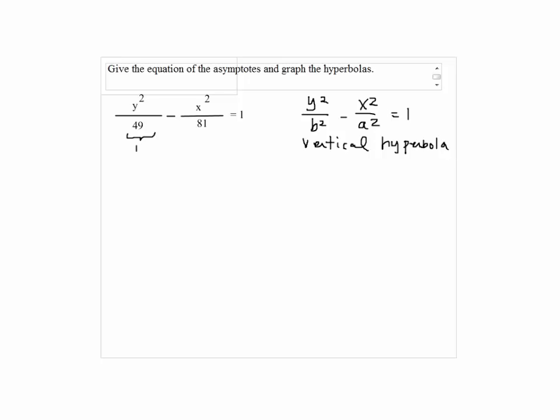We're going to identify a and b. 49 is b squared, so b equals 7. 81 will be a squared, so a will be 9.